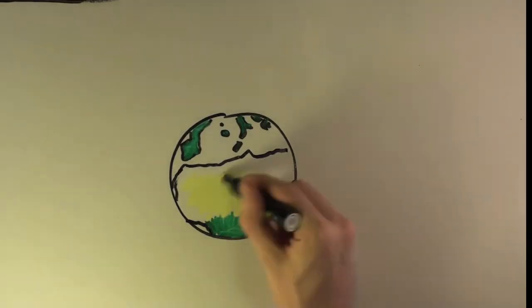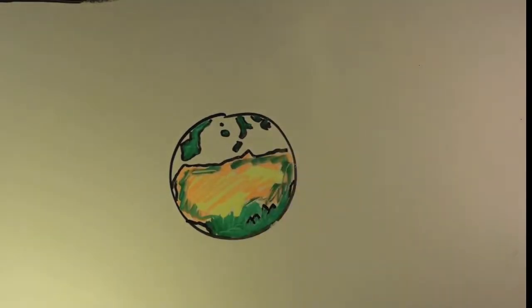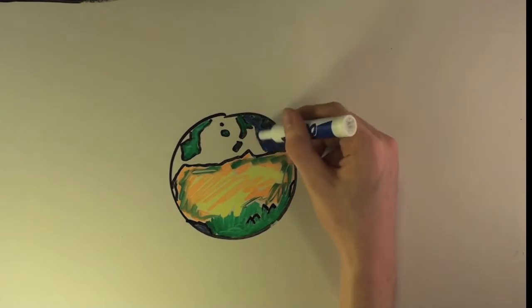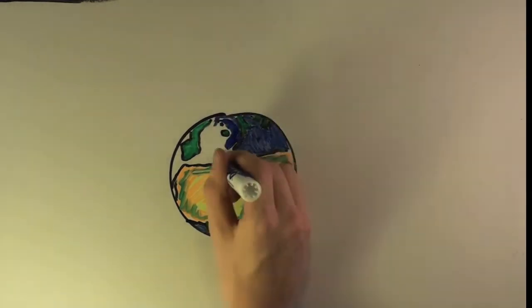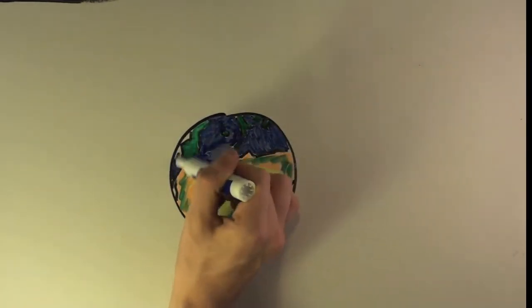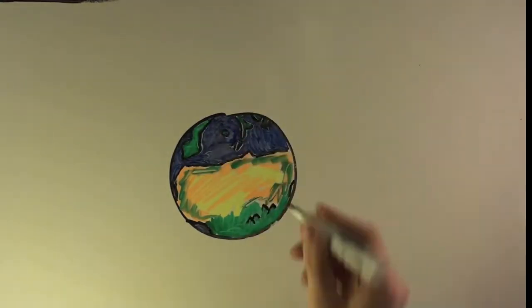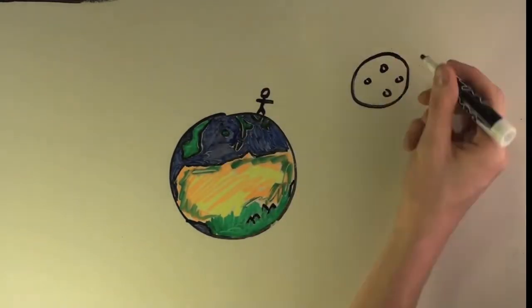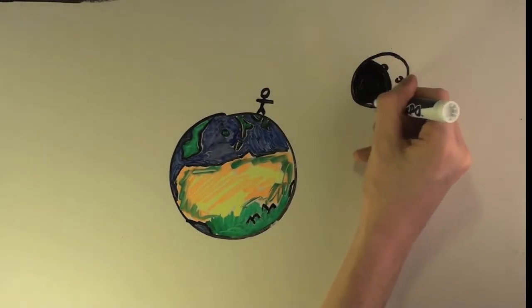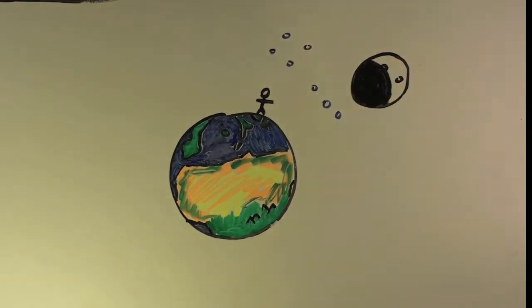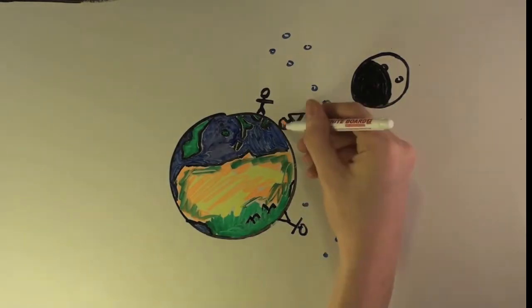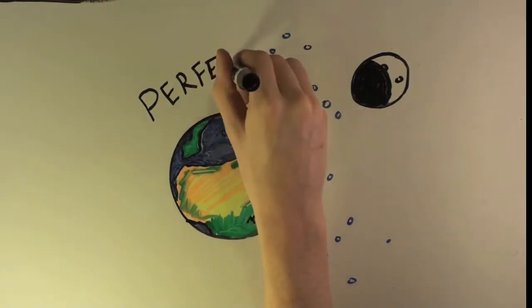Pythagoras drew this revolutionary conclusion for four reasons. The Earth casts a circular shadow on the Moon during lunar eclipses. Constellations change when you move from north to south. Boats disappear over the horizon, and because spheres are perfect geometric forms.